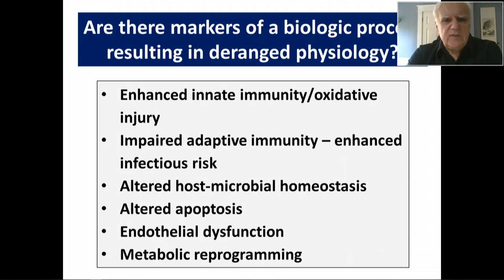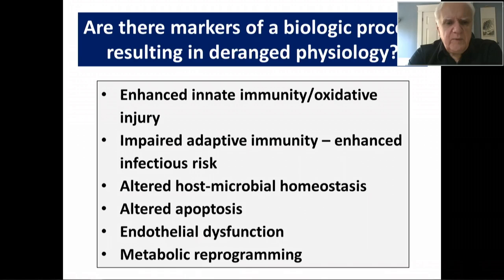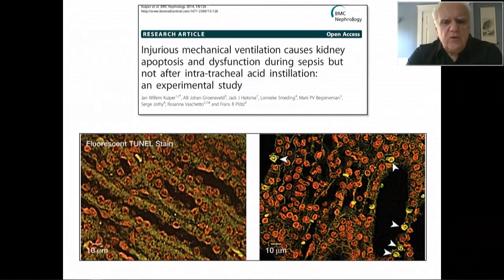What it means in organ dysfunction is that we need a better understanding of what's behind this deranged physiology so that we might intervene earlier — not to correct the physiology, but to correct the process that leads to that deranged physiology. That could be alterations in innate immunity, oxidative injury, increased infectious risk because adaptive immunity is impaired, abnormal host microbial homeostasis leading to increased risk of infection, altered apoptosis, endothelial dysfunction, or even reprogramming of cells at a fundamental metabolic level. There are studies that show that some of these processes are in fact going on and contributing to organ dysfunction.